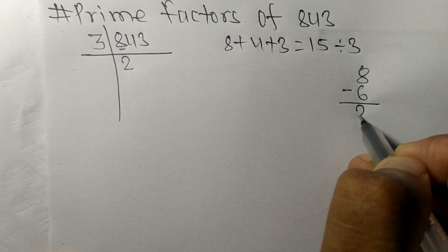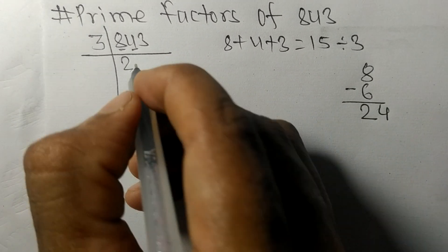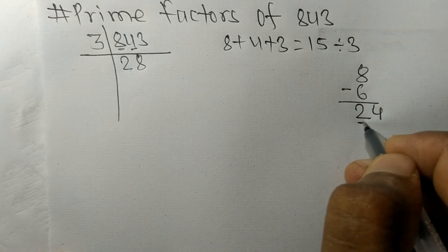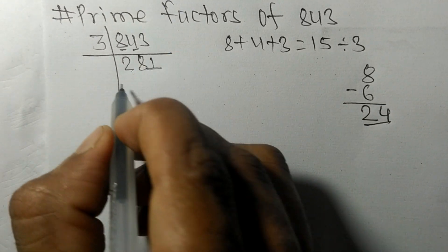On subtracting, we get 2, and with the 4, we have 24. 3 times 8 equals 24, and 3 times 1 equals 3.